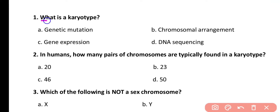Question number 1. What is karyotype? Options: genetic mutation, chromosomal arrangement, gene expression, DNA sequencing. Correct answer is option B. Karyotype is an arrangement of chromosomes within a cell.